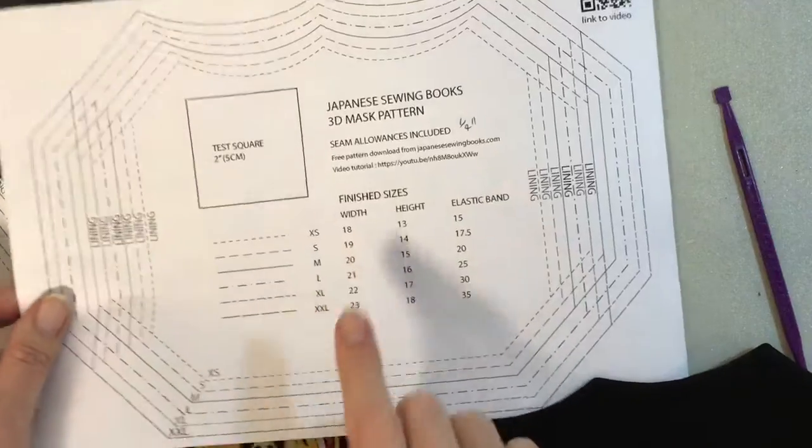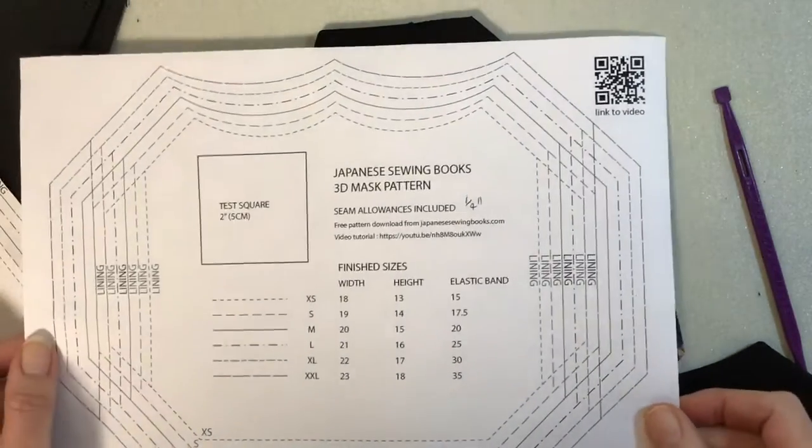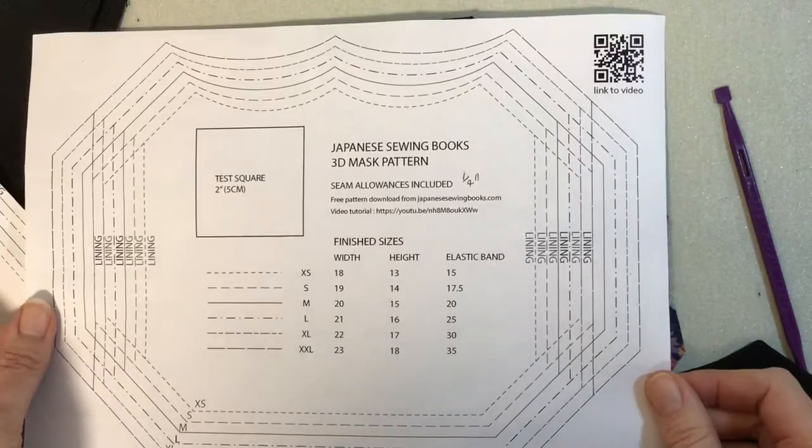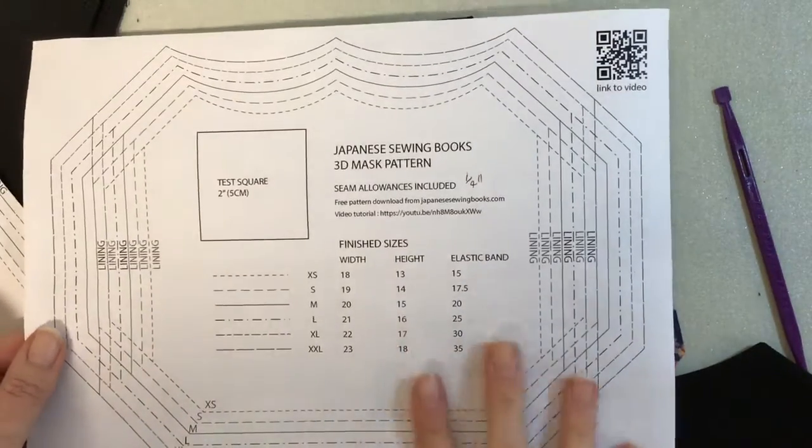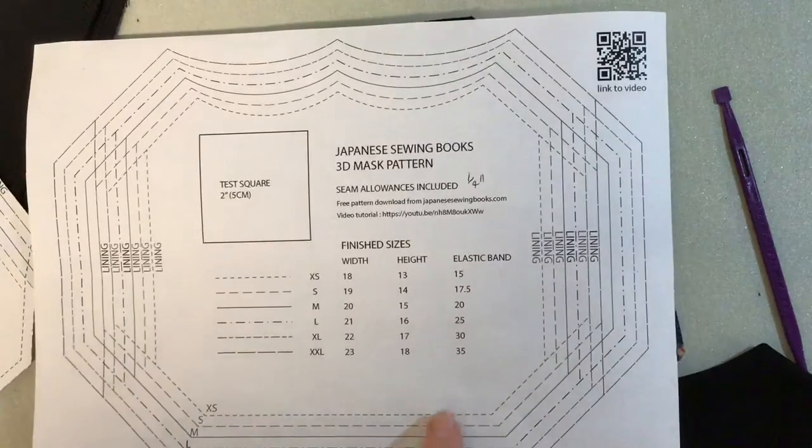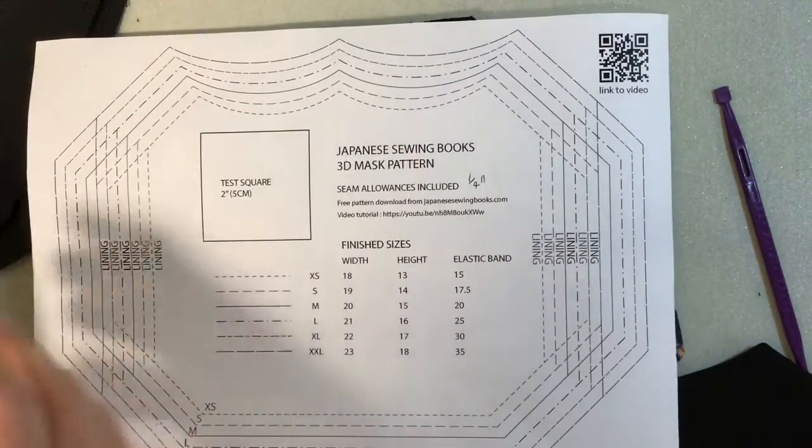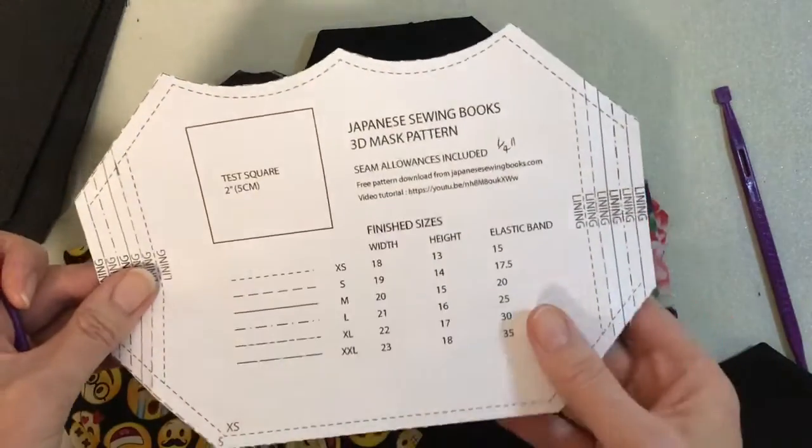It's here, there's a QR code there if you want to take a snapshot of that. I print out the pattern like this and then I cut out the one I want to use. It has all the sizes on it. This is the one I'm using for the small one today.